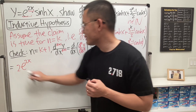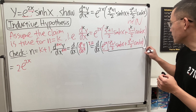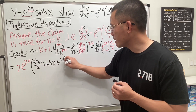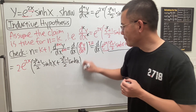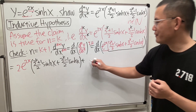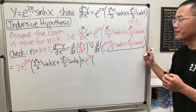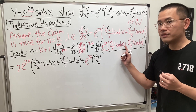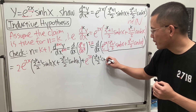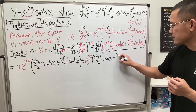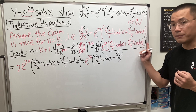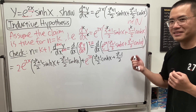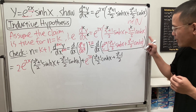Applying the product rule: first, differentiate e to the 2x giving 2 times e to the 2x, then keep the second function, which is 3 to the (k+1)/2 sinh x plus 3 to the (k−1)/2 cosh x. Then keep e to the 2x and multiply by the derivative of the second function: the derivative of sinh is cosh, so 3 to the (k+1)/2 cosh x, and the derivative of cosh is sinh, giving 3 to the (k−1)/2 sinh x.